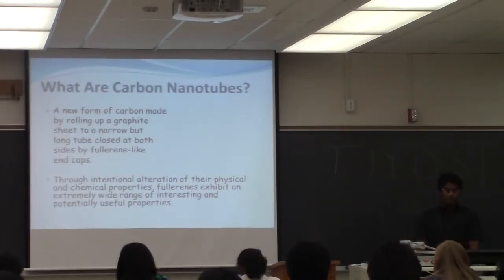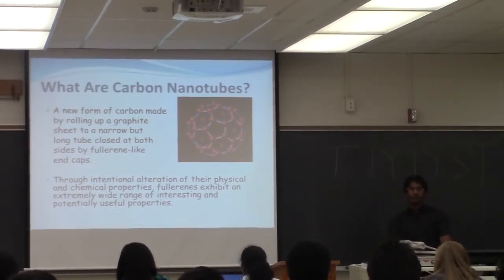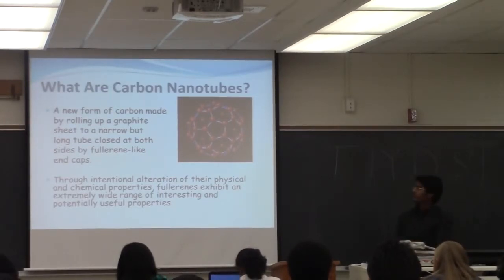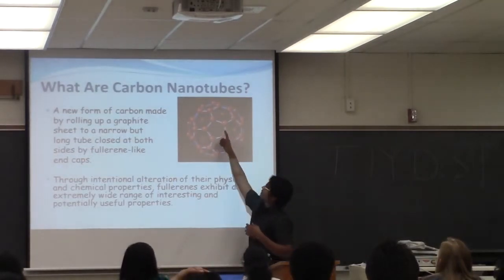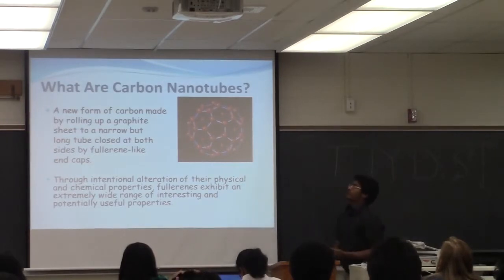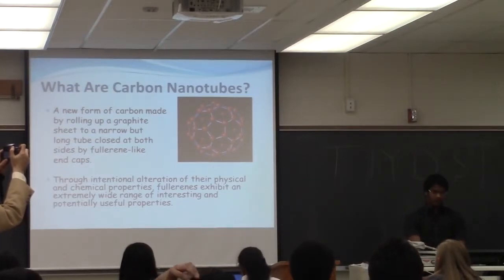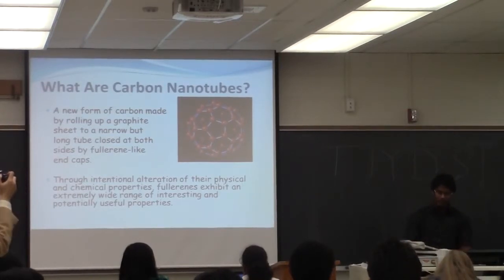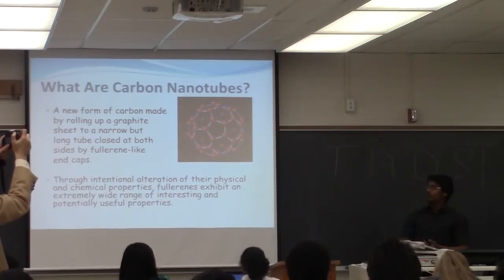What exactly are carbon nanotubes? They are a new form of carbon made by rolling up a graphite sheet — graphite is made up of carbon — into a narrow but long tube, closed at both sides by fullerene-like end caps. Fullerene is a molecule of carbons. These exist in three different structures: spherical, elliptical, and tubular. Through intentional alteration of their physical and chemical properties, fullerenes exhibit an extremely wide range of interesting and potentially useful properties, and have been widely used in all sectors.